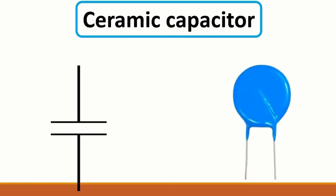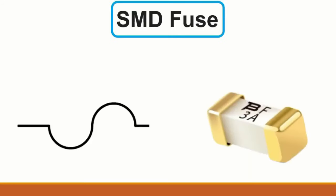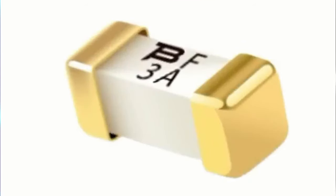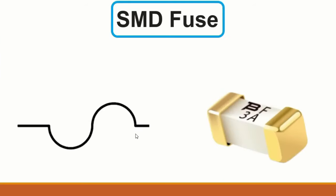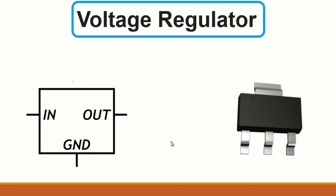Then we have the SMD fuse. It is SMD because it has no through-hole terminals. Its symbol is shown here, and the rating - for example, 3A - means the maximum current this fuse can support is three amps.